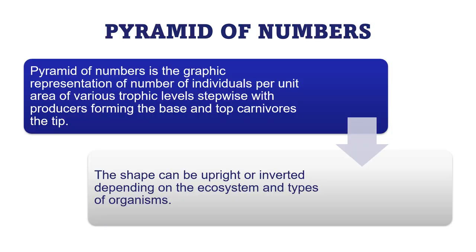Let's understand what the pyramid of numbers is. The pyramid of numbers is a graphical representation of the number of individuals per unit area — per square meter or per square kilometer — at various trophic levels stepwise: producers, herbivores, and carnivores. This shape can be upright, inverted, or spindle-shaped depending on the ecosystem.